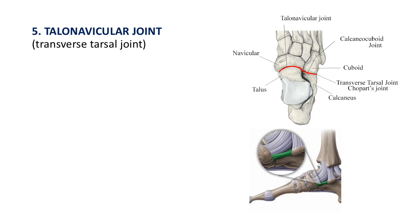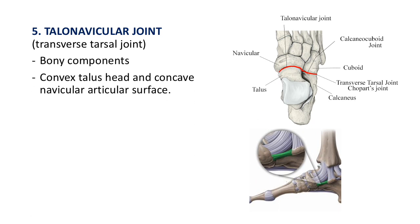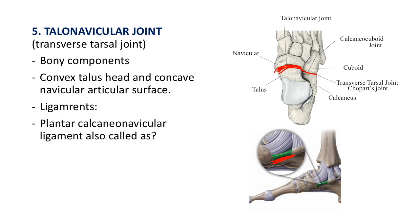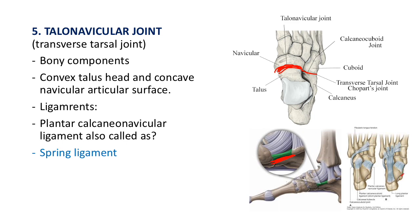The talonavicular joint is part of the transverse tarsal joint, formed between the talus and the navicular bone. The head of the talus is convex while the navicular articulating surface is concave. The important ligament supporting this joint inferiorly is the spring ligament, or plantar calcaneonavicular ligament. This ligament prevents the talus from displacing from the navicular bone when standing, and is important for maintaining the arch of the foot.